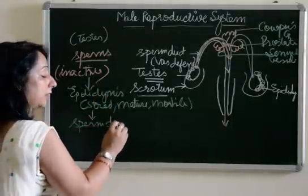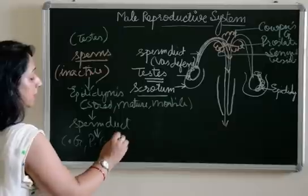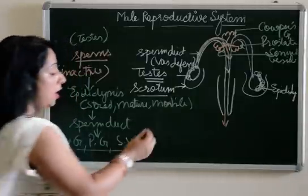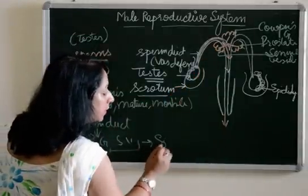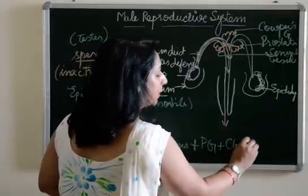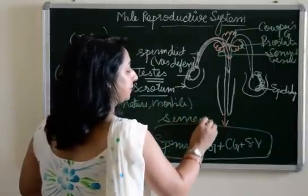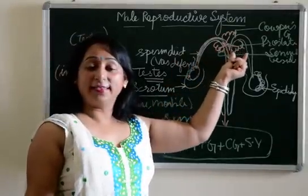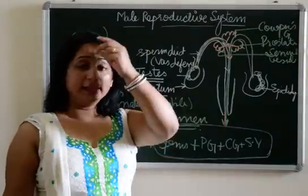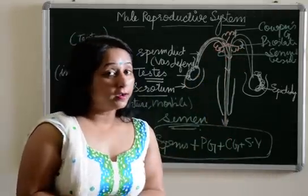From the epididymis the sperms move into the sperm duct. Through the sperm duct they reach the three accessory glands — Cowper's gland, prostate gland, and seminal vesicles. These three glands pour their fluid secretion over the sperms. The result is sperms plus the secretion from the prostate gland plus the secretion from the seminal vesicles, and this whole fluid is known as semen. The semen is finally passed out from the male's body.